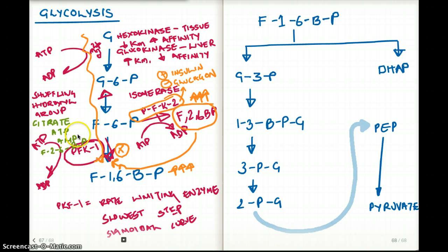For PFK1, the regulators are citrate, which is going to have a negative effect on PFK1, ATP, which is going to have a negative effect on PFK1, AMP is going to have a positive effect on PFK1, and fructose 2,6-bisphosphate, so this product right here, is going to also have a positive effect, and this was allosteric effect on PFK1.